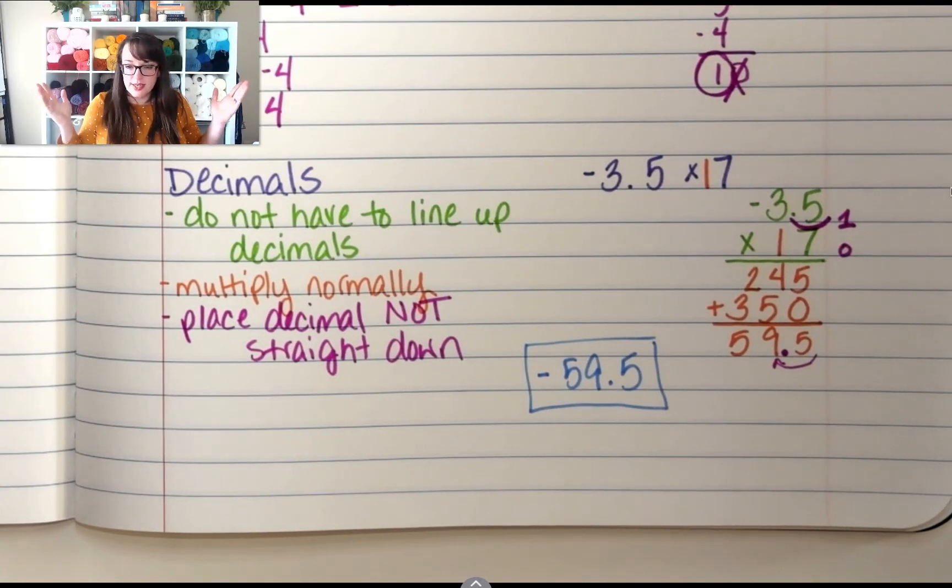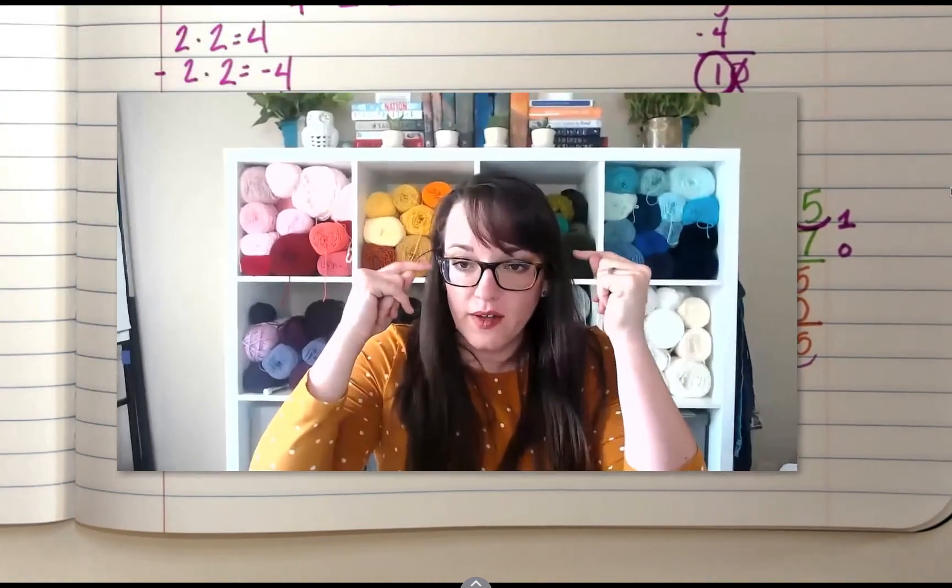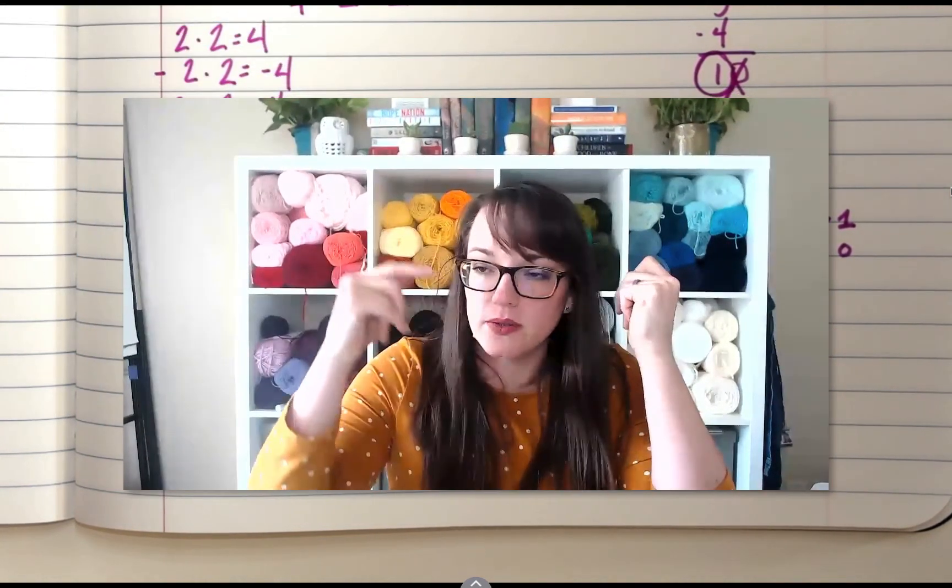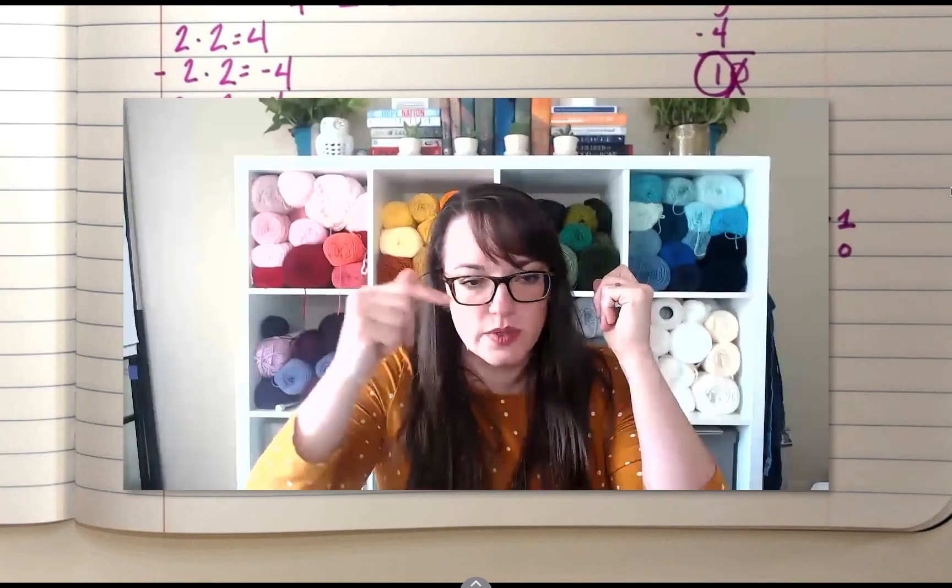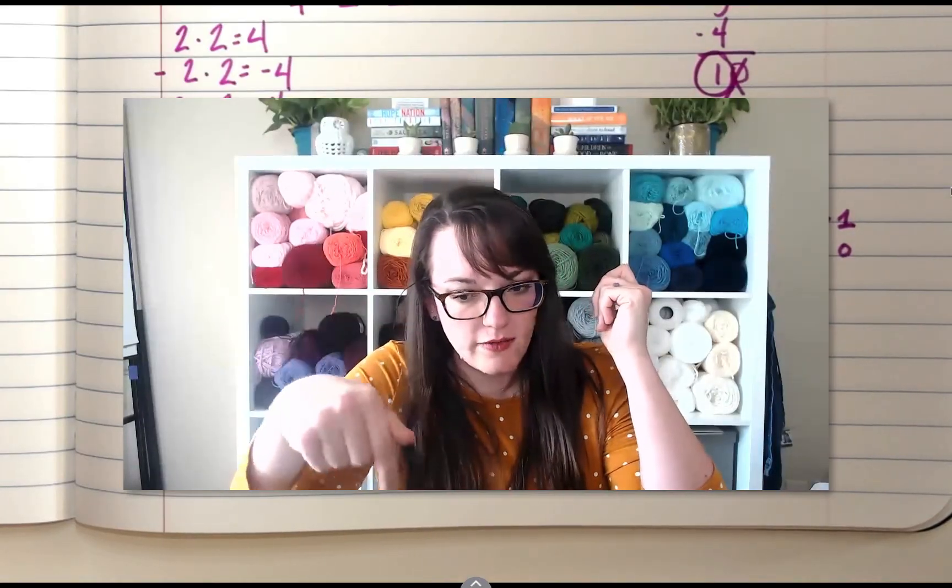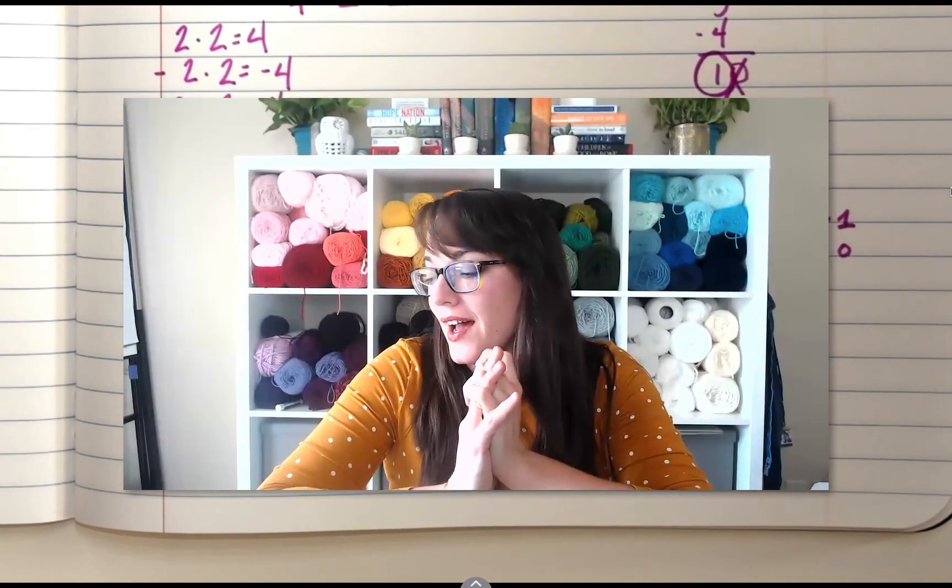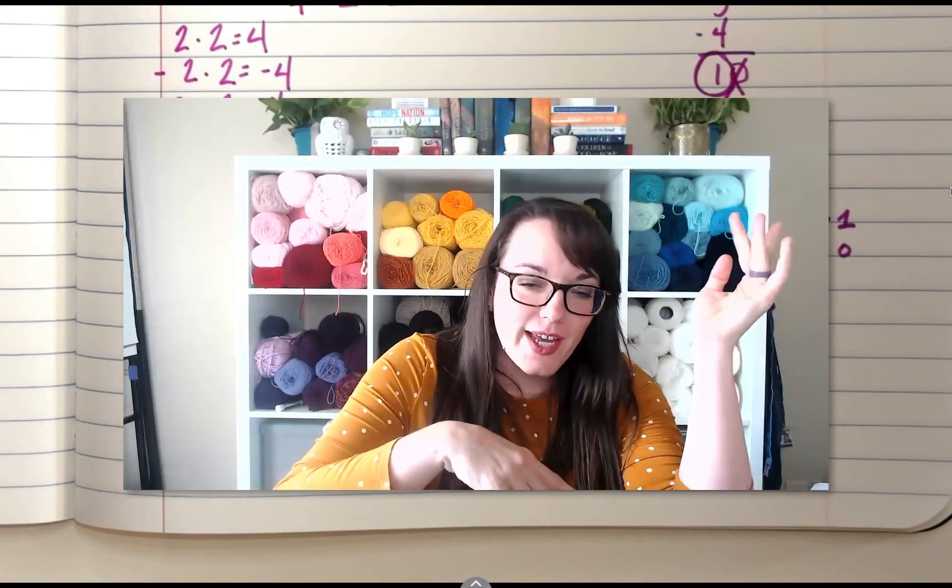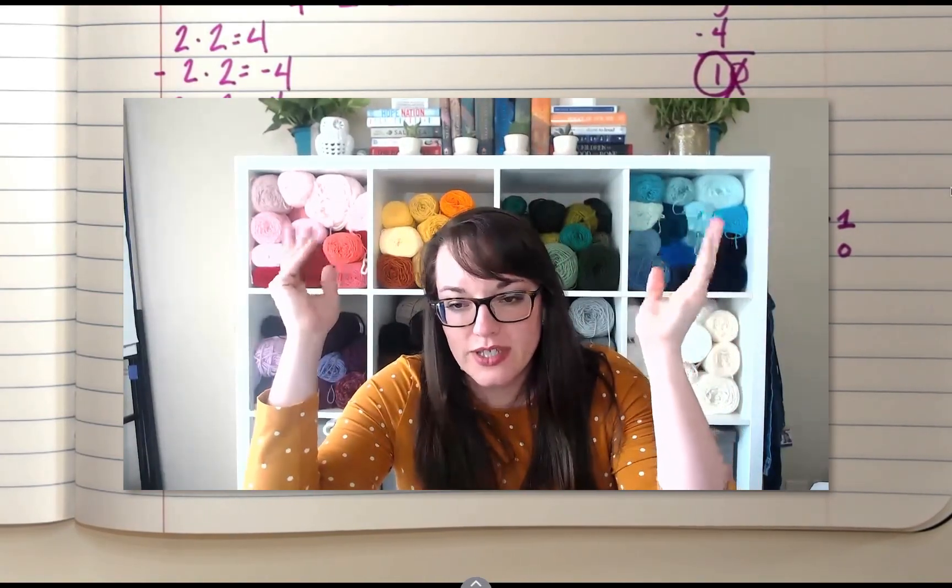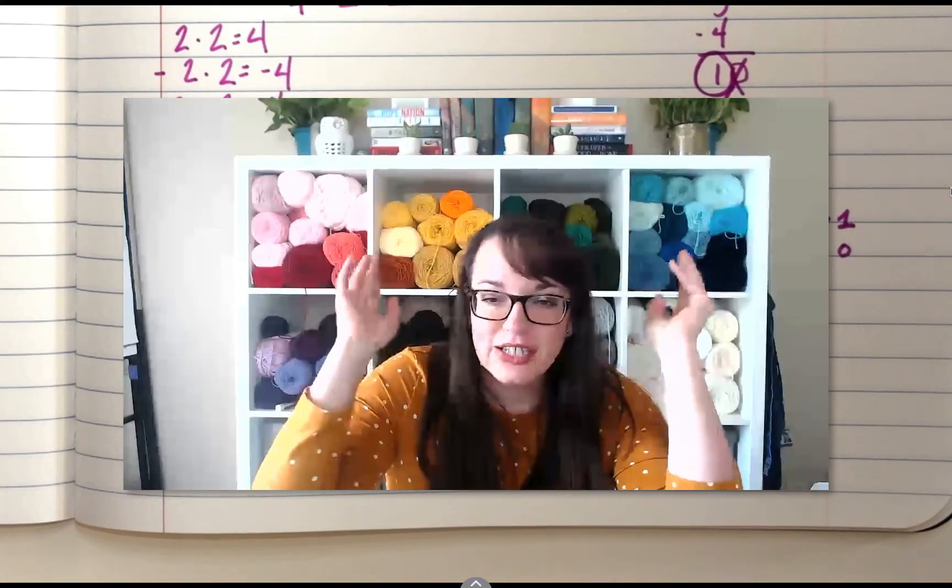All right. That's it. Don't forget to check your signs. Make sure you're thinking logically. If 2 times 2 is positive 4, then the opposite of 2 times 2 is a negative 4. All right. Thanks for hanging in there for one more day. I will see you guys next time. Don't forget to smash the like button. Subscribe to get notifications. And something about ringing a bell. I don't know. See you all next time.